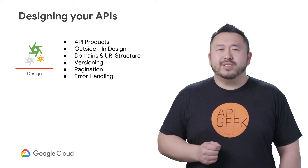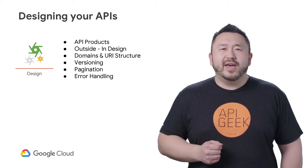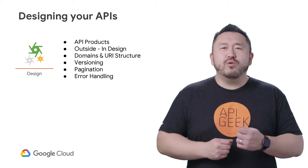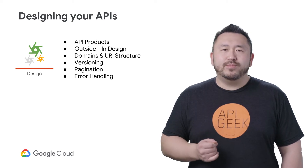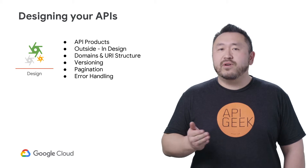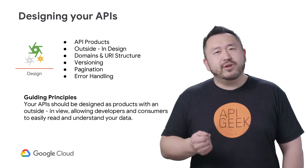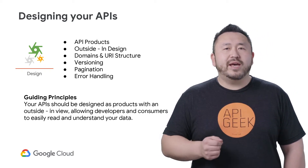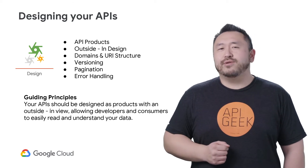At a large enterprise, many different lines of businesses and API teams will be producing APIs. And it's a slippery slope of discordant design if we don't all follow similar guidelines. This section details the important aspects of your API design, and helps to guide a consistent look, feel, and function of all the APIs in your catalog. Your guiding principle: your API should be designed as products with an outside-in view, allowing developers and consumers to easily read and understand your data.